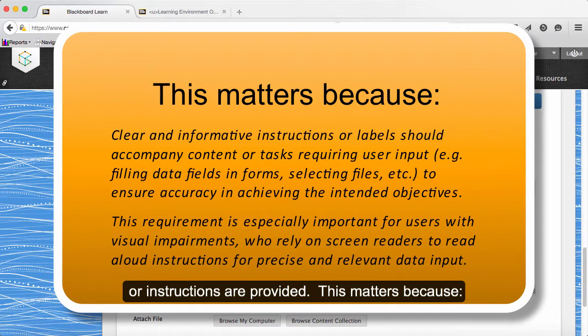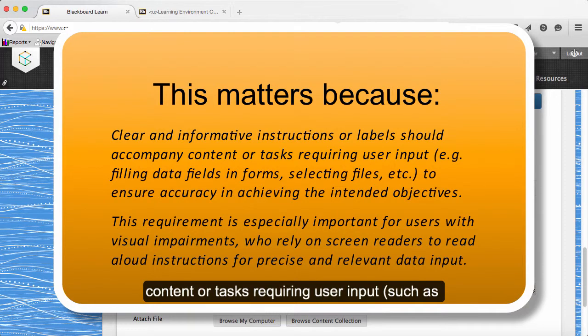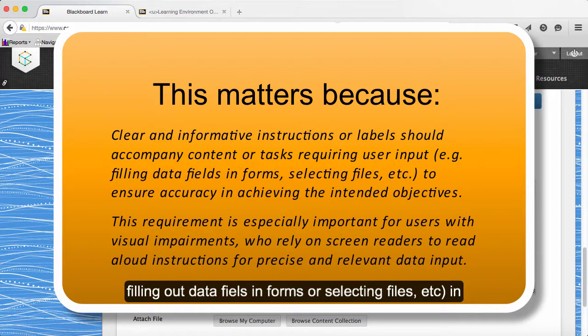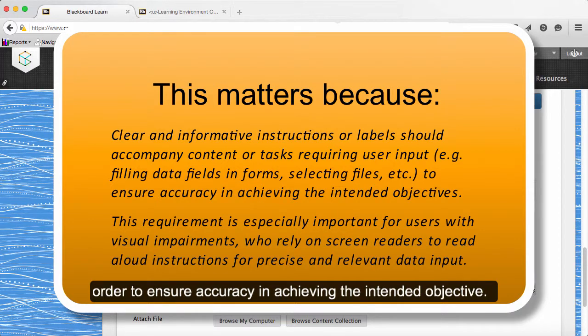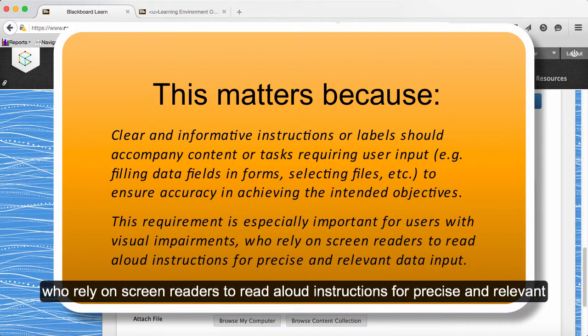This matters because clear and informative instructions or labels should accompany content or tasks requiring user input, such as filling out data fields in forms or selecting files, to ensure accuracy in achieving the intended objectives. This requirement is especially important for users with visual impairments who rely on screen readers to read aloud instructions for precise and relevant data input.